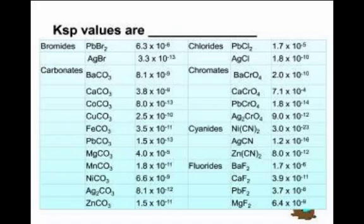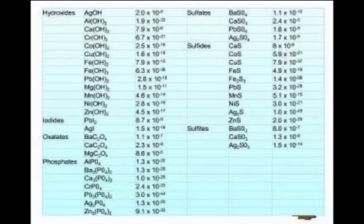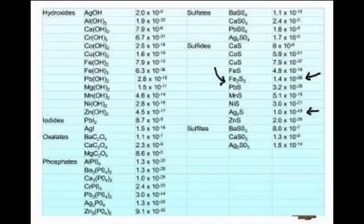There are tables of Ksp values in your textbook at page A25 if you have Zumdahl 6th edition. Take a look at all those numbers — what do you notice? They're tiny. We're talking 10⁻⁶, 10⁻¹³, 10⁻²³, down to 10⁻⁴⁹ for silver sulfide and 10⁻⁸⁸ for iron sulfide. There are apparently about 10⁸² atoms in the universe, so iron sulfide's Ksp is on the same magnitude as the inverse of that — an uber tiny number.